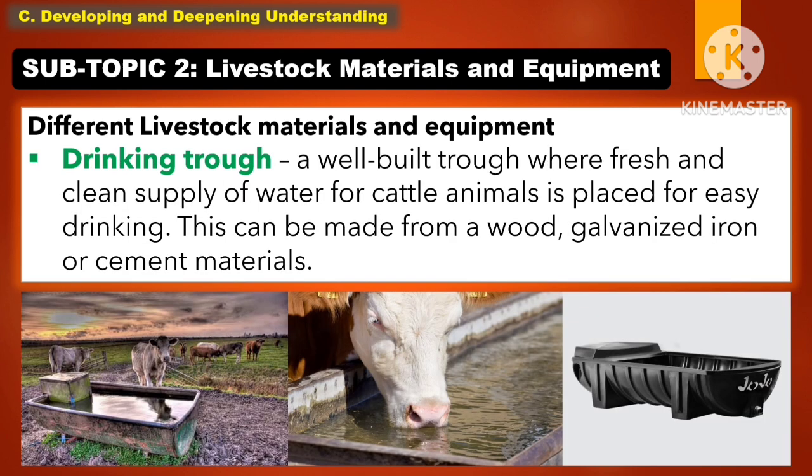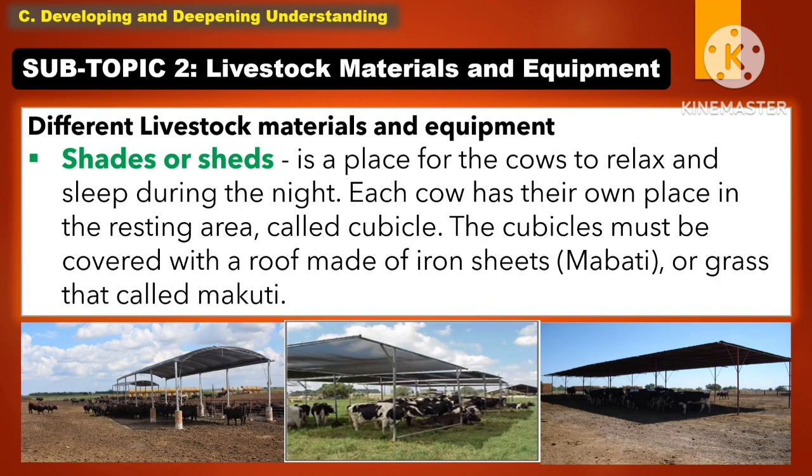Another livestock material and equipment is the drinking trough. It is a well-built trough where a fresh and clean supply of water for cattle animals is placed for easy drinking. This can be made from wood, galvanized iron, or cement materials.